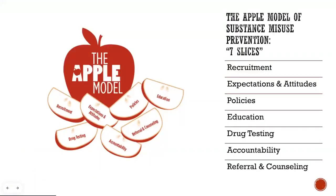I mentioned the Apple model — this is what you're really going to learn about while you're at the training institute and a little bit beforehand. We really looked at seven different areas where we can impact substance misuse prevention within athletics: everything from recruitment, those unspoken things like expectations and attitudes, the formal parts like drug testing, your policies, sanctions or accountability for drug testing, and kind of everything in between. Within those seven areas, we have developed guiding principles — what's really the perfect program, which no one ever achieves — but what are the standards we're hoping schools will work towards?